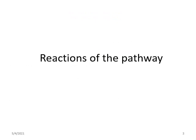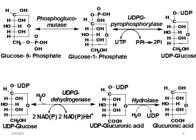Now, coming to the reactions of the pathway. First, glucose 6-phosphate is converted into glucose 1-phosphate in a simple isomeric reaction catalyzed by the enzyme phosphoglucomutase, where the phosphate group moves from the sixth to the first carbon atom. Then, glucose 1-phosphate is activated to UDP glucose by the enzyme UDP glucose pyrophosphorylase, with conversion of uridine triphosphate to inorganic pyrophosphate, producing UDP glucose.